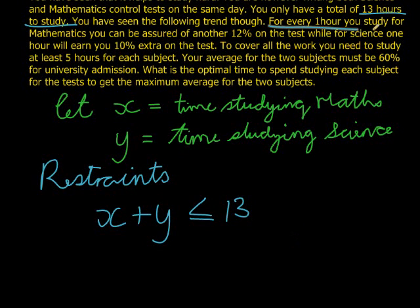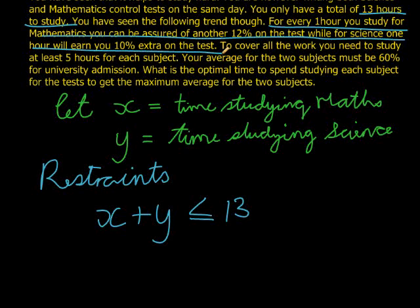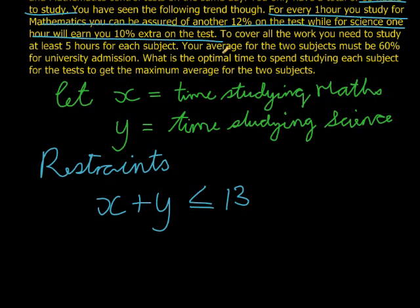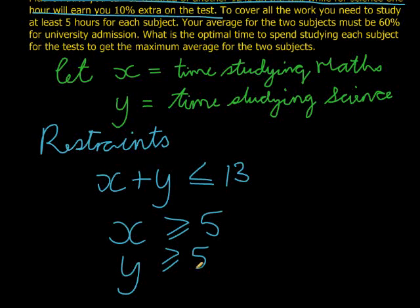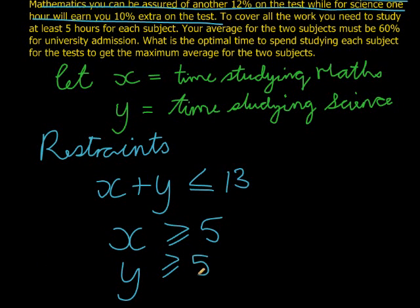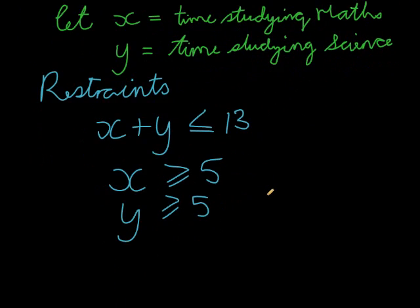For every one hour you spend studying mathematics, you can be assured of another 12% and science you can be assured of another 10%. That's not a restraint yet, they're not saying we must get at least or at the most or anything like that. But to cover all the work, you need to study five hours for each subject. In other words, studying for maths must be more or equal to 5 and studying for science must be more or equal to 5. To cover all the work you need to study at least five hours for each subject. Your average for the two subjects must be 60%. Now this one is a little bit difficult and again, do not worry if you don't yet know how to get it, but let me quickly show you.